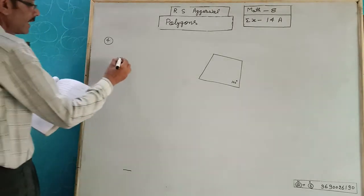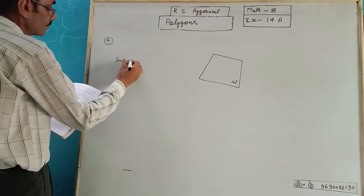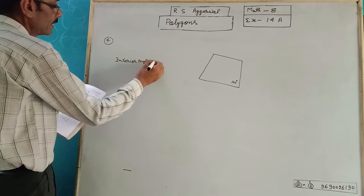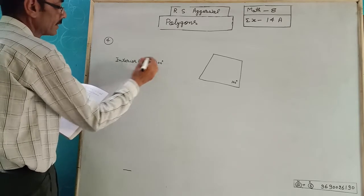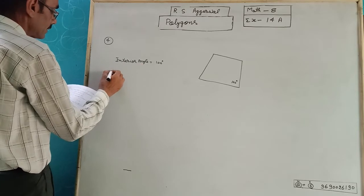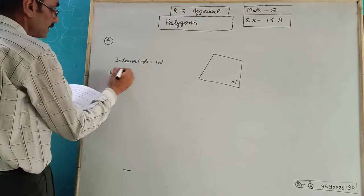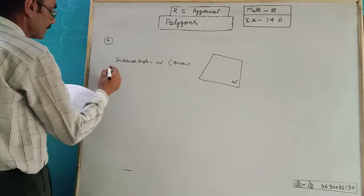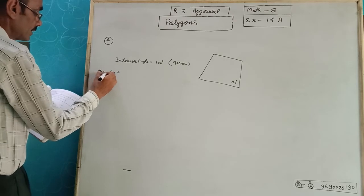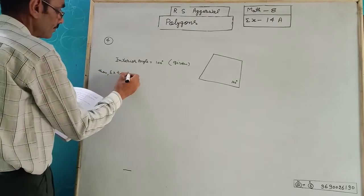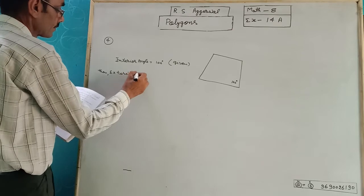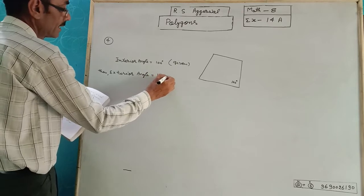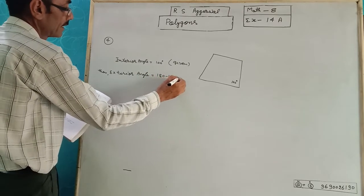Interior angle is equal to 100 degrees — that is given. Then, exterior angle will be 180 minus 100, which is equal to 80 degrees.